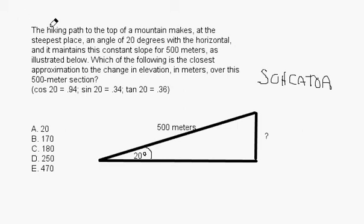Let's take a look. The hiking path to the top of a mountain makes, at the steepest place, an angle of 20 degrees with the horizontal, and it maintains this constant slope for 500 meters, as illustrated below. Which of the following is the closest approximation to the change in elevation in meters over this 500-meter section?